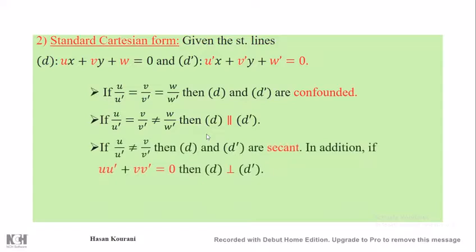If U/U' does not equal V/V' — you calculate U/U' and compare the answer with V/V', and if they are not equal — then D and D prime are secant or intersecting. In addition, if U·U' + V·V' = 0, this indicates that D and D prime are perpendicular. We can apply these conditions in order to directly deduce the relative position of two straight lines.